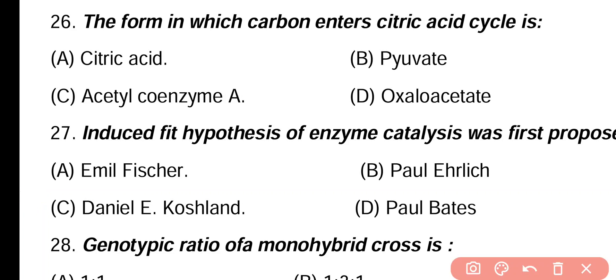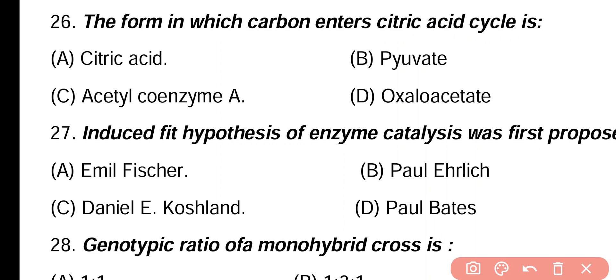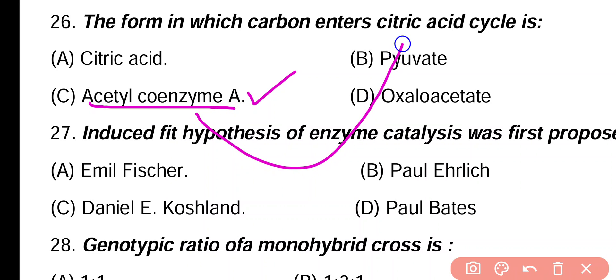Question 26. The form in which carbon enters the citric acid cycle is: citric acid, pyruvate, acetyl coenzyme A, oxaloacetate. Correct answer is option C. During metabolism, carbon is changed into the form of acetyl coenzyme A, which then enters the citric acid cycle. Carbon leaves the citric acid cycle in the form of carbon dioxide.